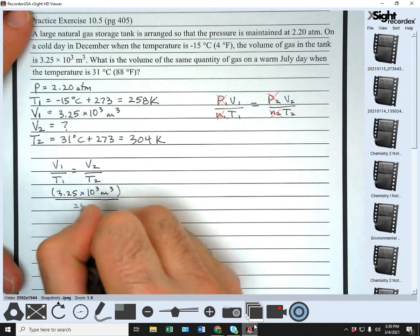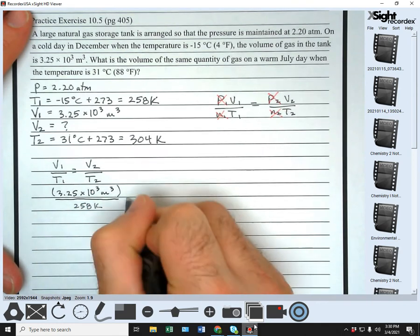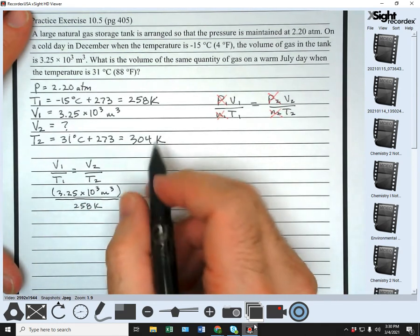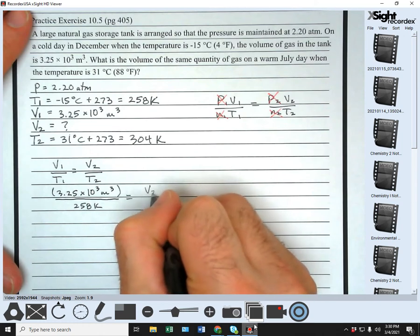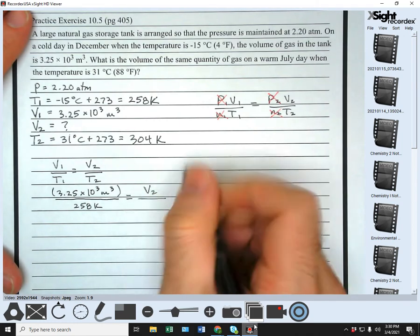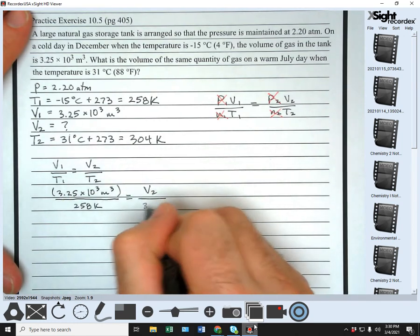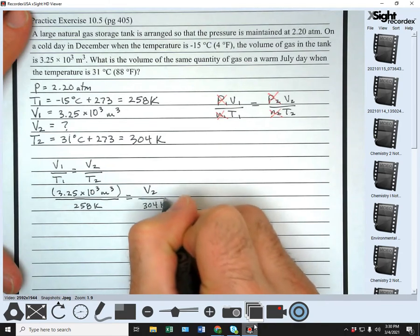equals, we don't know our V2, over T2, which is 304 K. Okay.